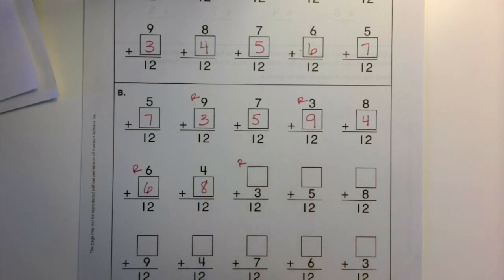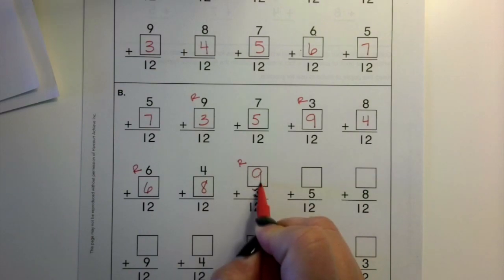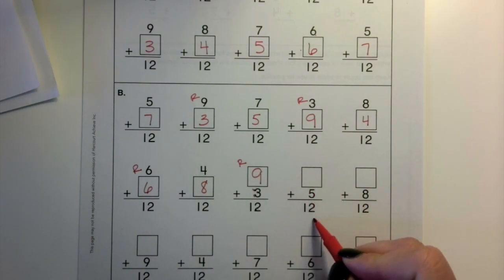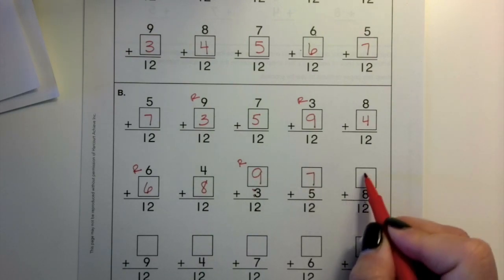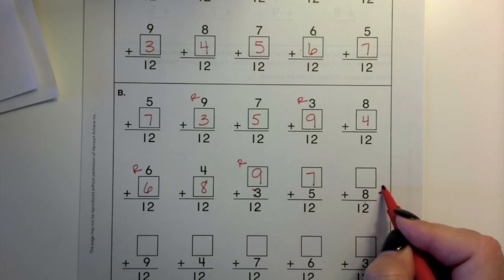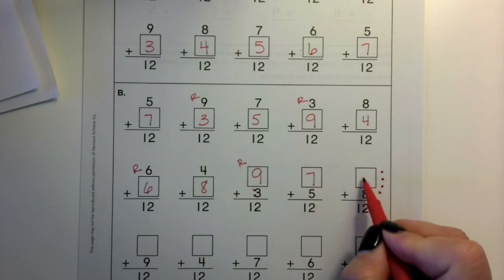What plus 3 is 12? Start at 12 and go back 3. 12, 11, 10, 9. What plus 5 is 12? 7. And what plus 8 is 12? 9, 10, 11, 12. 1, 2, 3, 4.